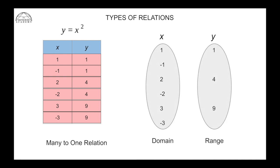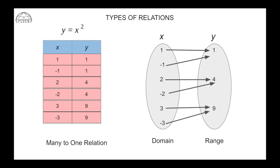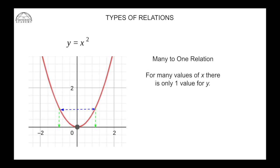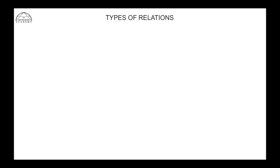In the bubble diagram for the many-to-one relation, we can see two values of x both mapping onto one value of y — many inputs mapping to one output. On the graph of y = x², two different values of x shown by the green lines both have the same value of y. So for many values of x there is only one value of y.